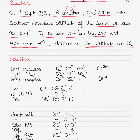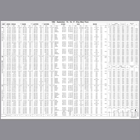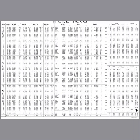The first thing we'll do is find the LMT of the meridian passage for 1st of September 1992 from the nautical almanac. Going into the nautical almanac for 1st of September 1992, in the bottom right corner you'll find the meridian passage time for the Sun. For 1st of September, the time is 12 — so your LMT meridian passage is 1200 hours.